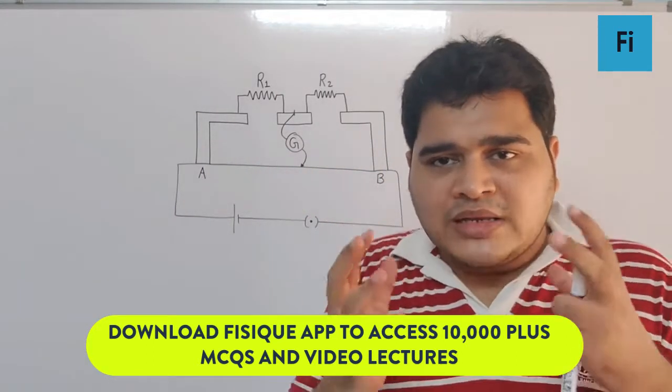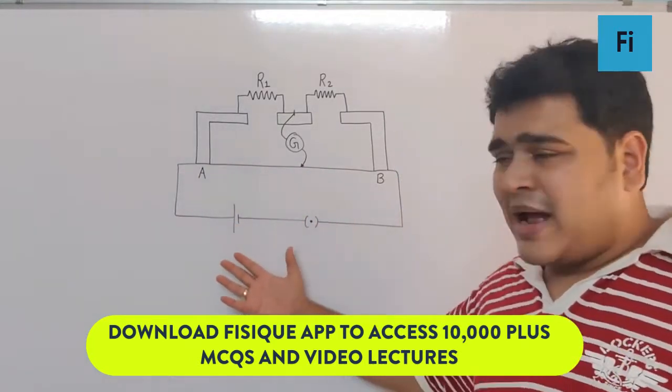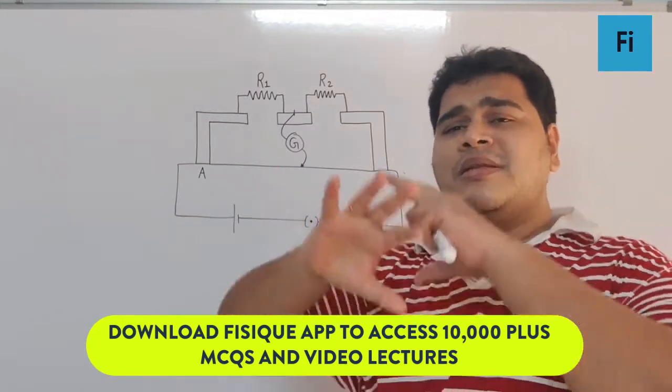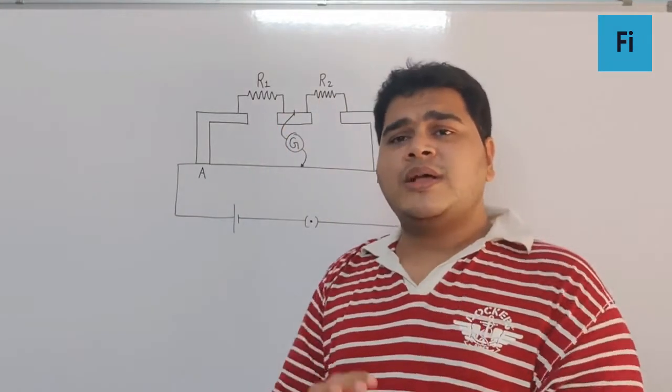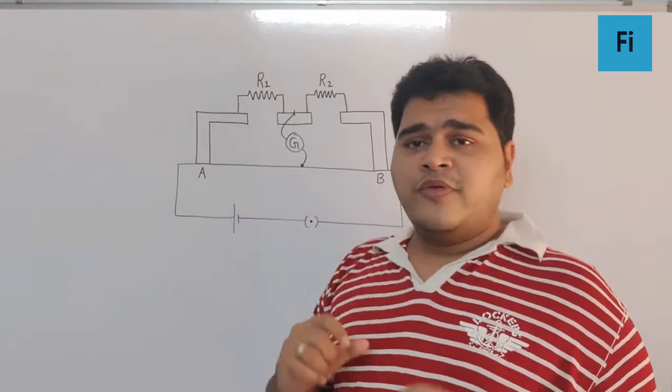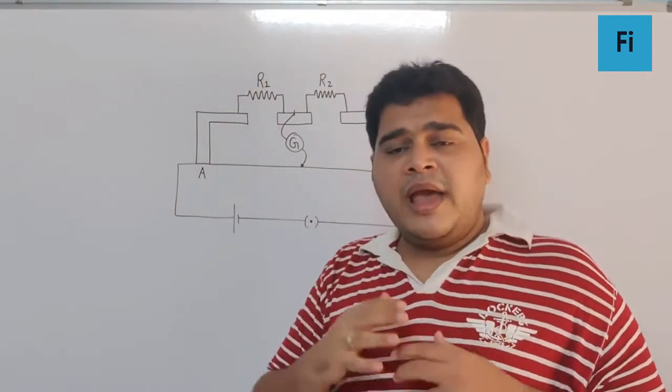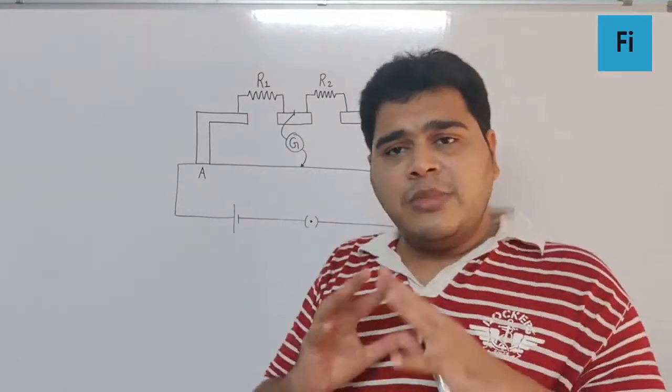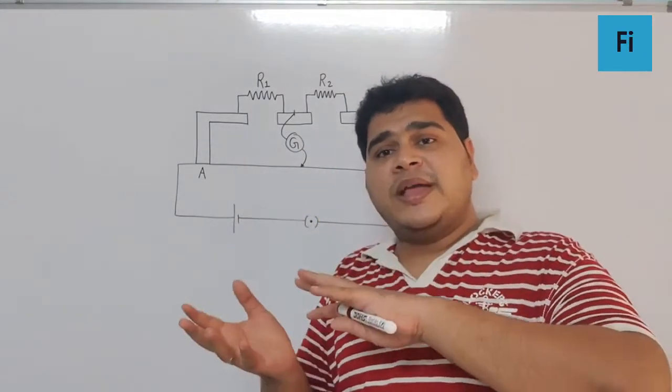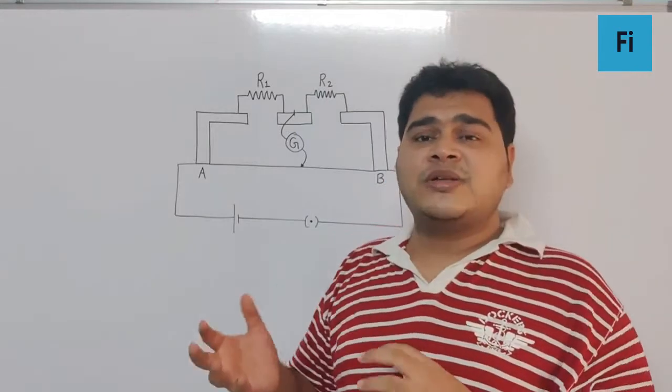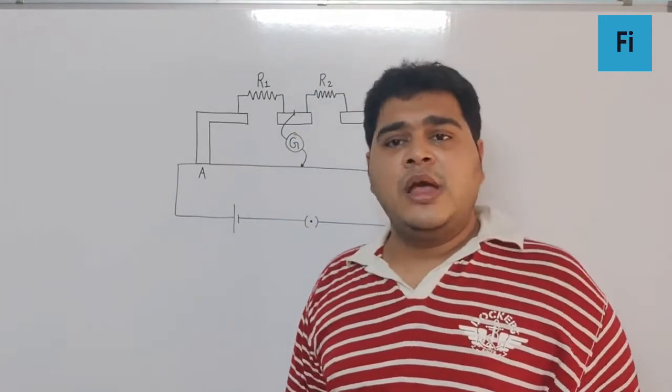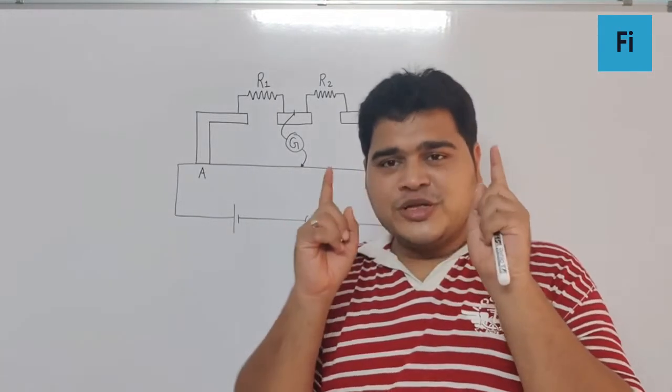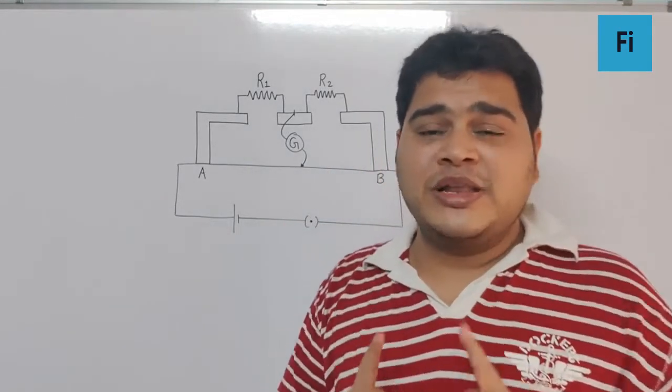We are not changing the wire, battery, value of R2, galvanometer, or anything else. The only thing we are changing is R1. First we change R1 to R1 plus 10, and then we want R1 plus 10 to be connected with some unknown resistance so that we get the same balancing length again, which means we want R1 to be back.